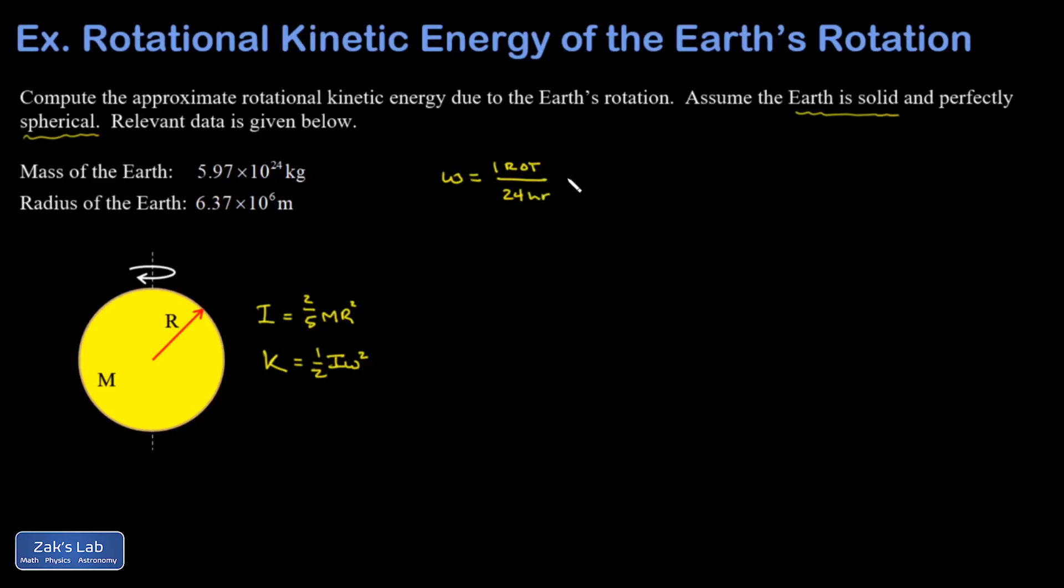So omega is one rotation per 24 hours. Well, there's two pi radians in one rotation. So that term is gone.